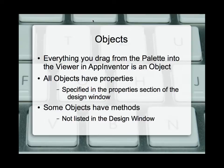Additionally, some objects have methods. If that object is something that can do something — say, for example, a button — it will have a method. But none of those methods are actually listed in the design window. All of the methods for App Inventor are done inside the code blocks of the blocks editor. So we can't actually tell if something has a method until we go to the blocks editor window.